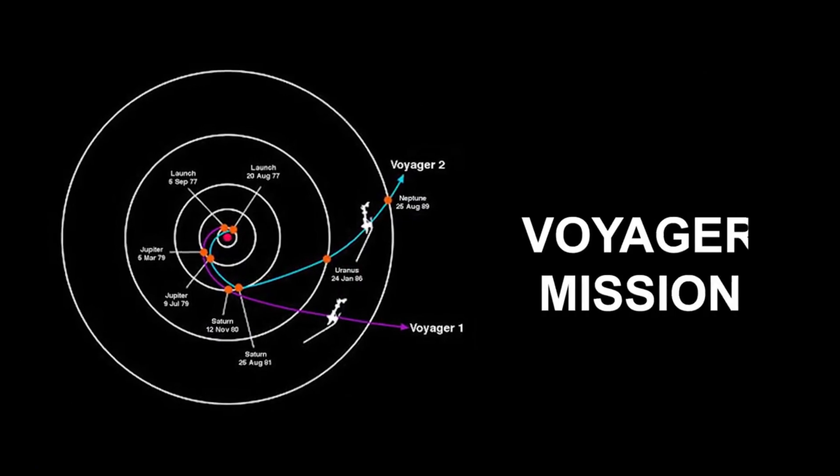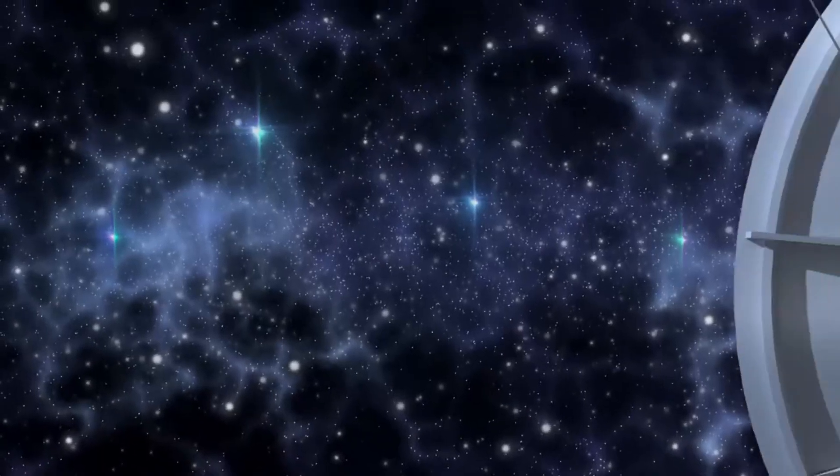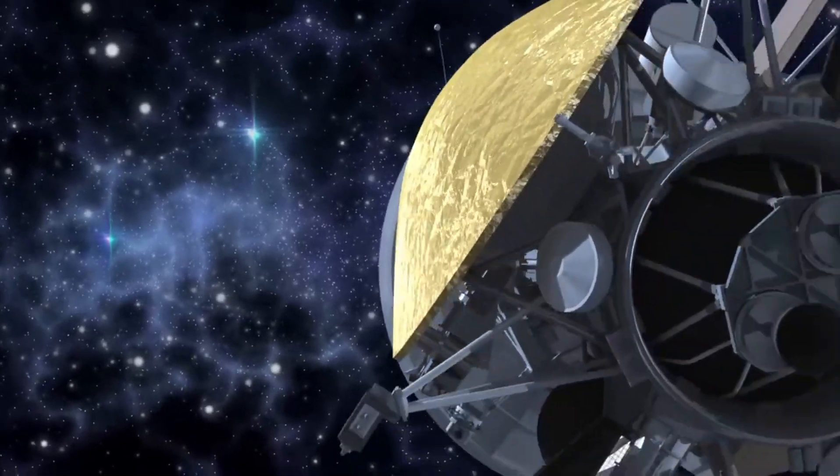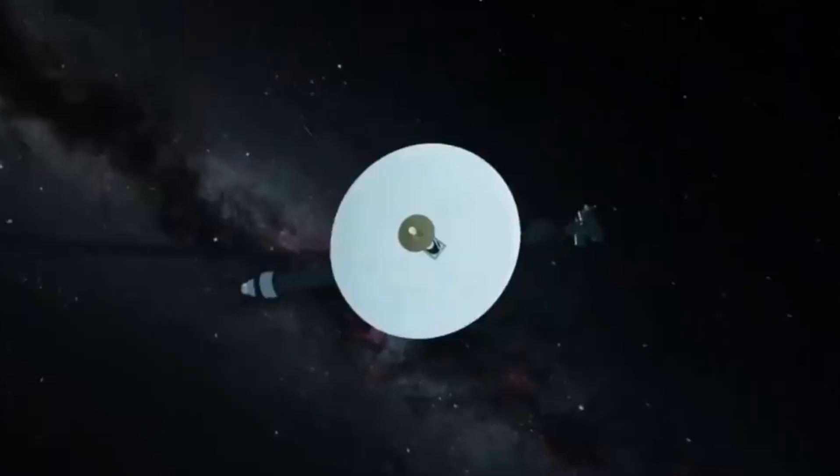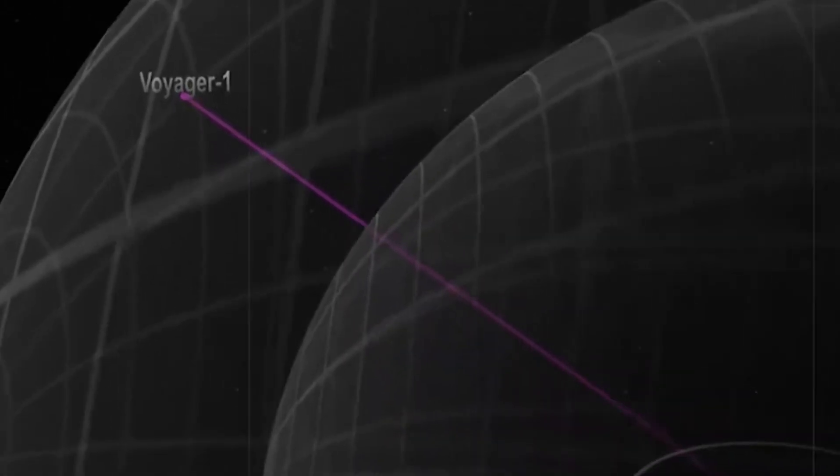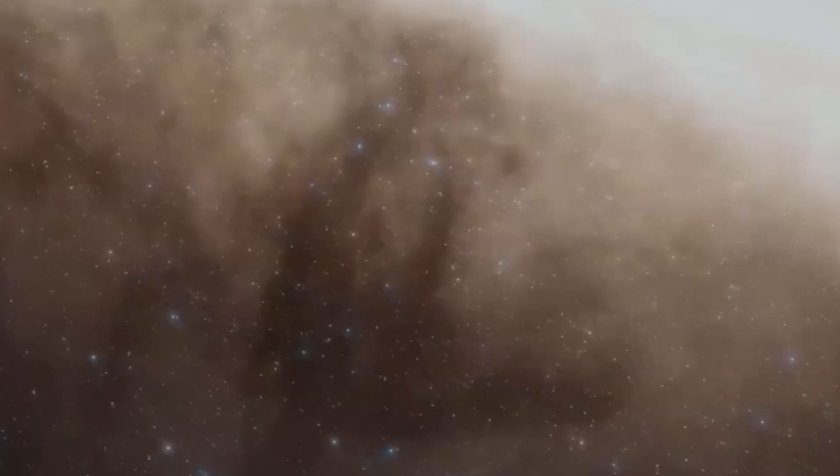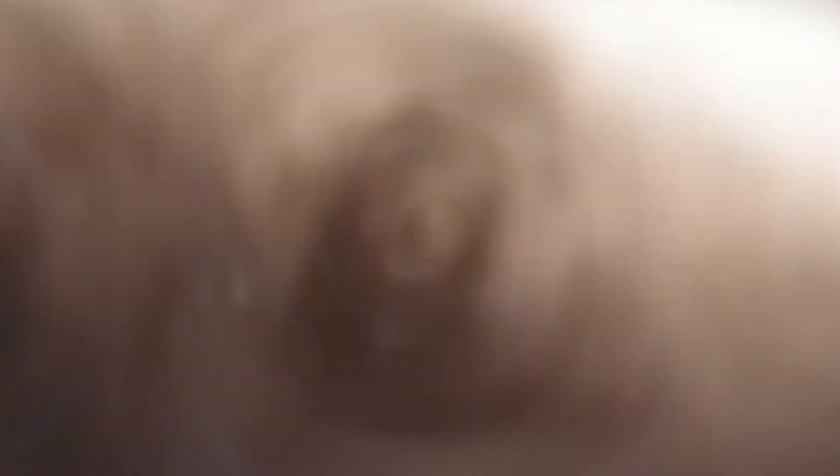The fact that the Voyagers have lasted so long has proven invaluable to the world of astronomy. Without these two probes, we might never have had a chance to study the unknown that lies beyond our solar system for a very long time. Our Sun is surrounded by an enormous cosmic bubble called the heliosphere. This bubble is filled with the plasma that comes from the Sun's solar wind. The edge of the heliosphere is called the heliopause, where the solar wind collides with the surrounding interstellar medium.